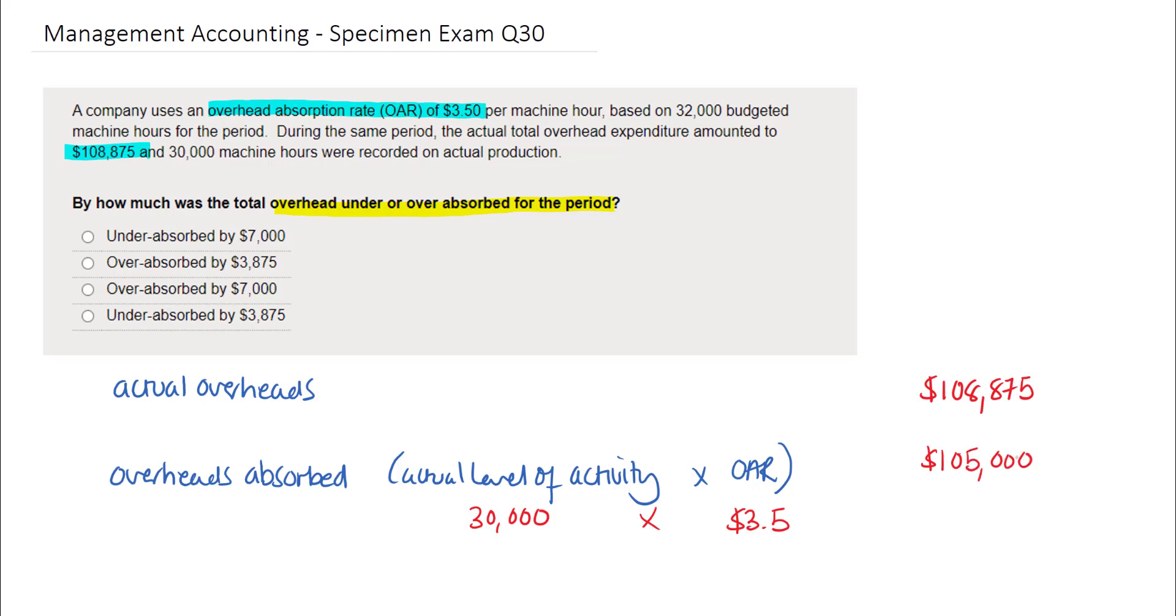Now it's simply a case of comparing the actual overheads against the overheads absorbed. We can see that the actual overheads are higher than the overhead that has been absorbed, implying that this is an under absorption for the difference between these amounts, which is £3,875. Looking at the options provided, that is option D or the last option in this particular question.